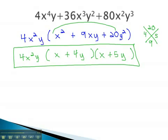And that will give us our final factors: 4x²y times (x + 4y) times (x + 5y).